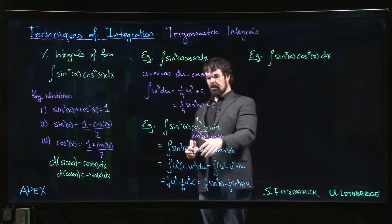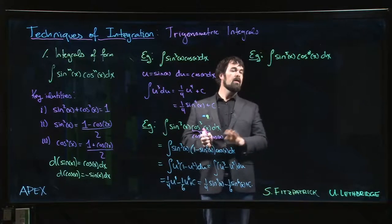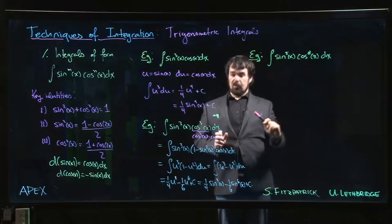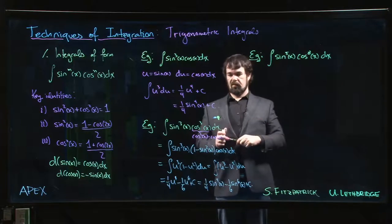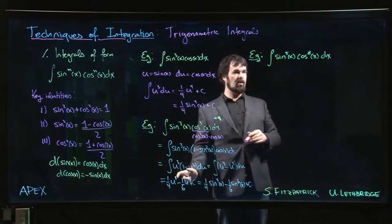This example is similar to the last one with slightly larger powers, but don't let that scare you - same idea applies. In this case, only one of the two powers is odd: sine is raised to the odd power, cosine is raised to an even power. So we don't get a choice in the substitution like we had in the last one.